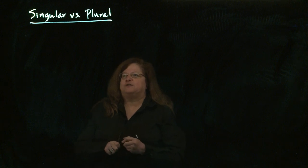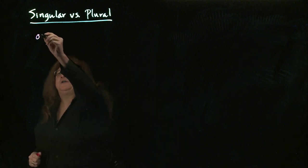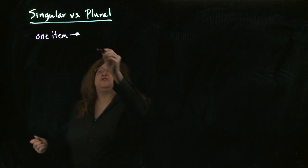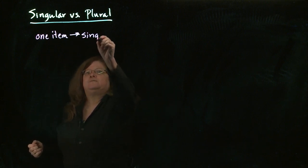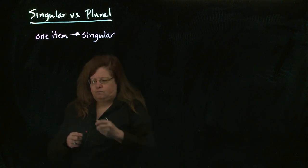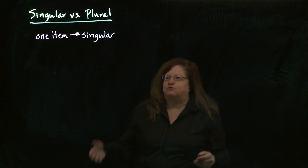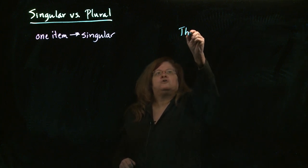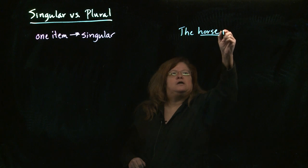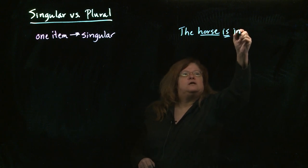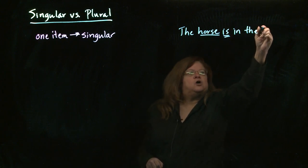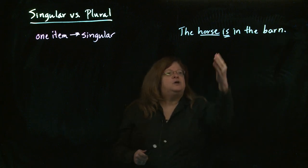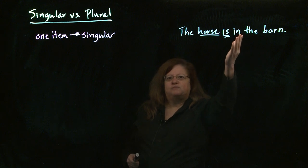To start out, it's fairly simple. If you have only one item, that's obviously going to be singular, and so you're going to be using singular verbs and singular pronouns. For example, I can say 'the horse is in the barn.' Since horse is singular, I'm using the singular form of the verb: is.